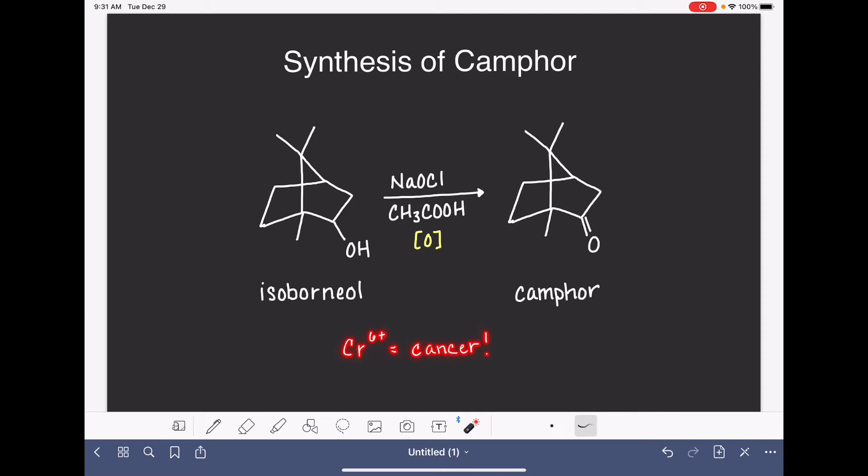So instead of using these chromium-6 reagents, we're going to be using sodium hypochlorite, NaOCl. This is the active ingredient that is found in household bleach, like what you would use in your laundry, and then a little bit of acetic acid, CH3COOH.